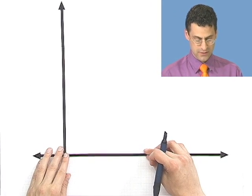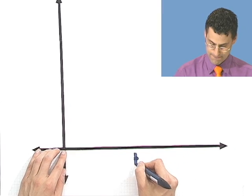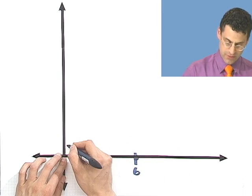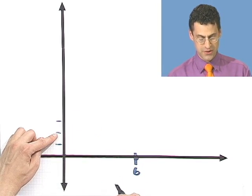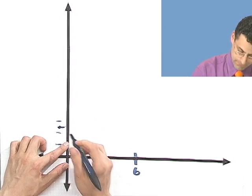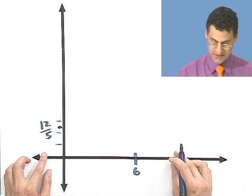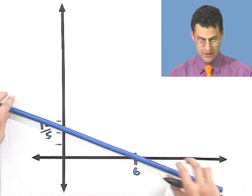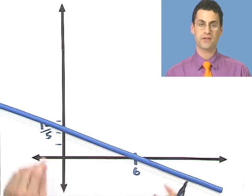What does the graph look like? Going over 6 on the x-axis and up 12 fifths — which is 2 and 2 fifths, almost 2 and a half — on the y-axis, and knowing it passes through those two points and is a straight line, I can graph a very accurate picture. The graph is a straight line through those two intercepts. You can get a really neat picture fast just by finding the intercepts.